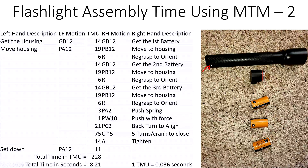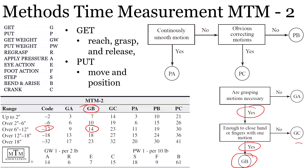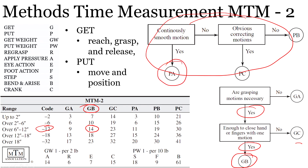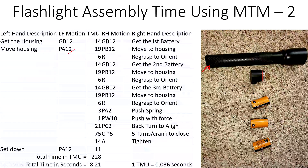Then I move the housing close to the work area — that's PA12. Looking at the put algorithm: is it a continuously smooth motion? Yes. It's a simple object — the housing — so that gives us PA, which is very straightforward.